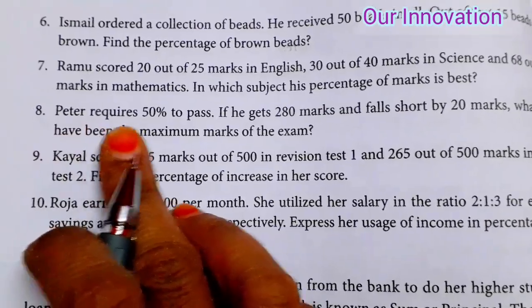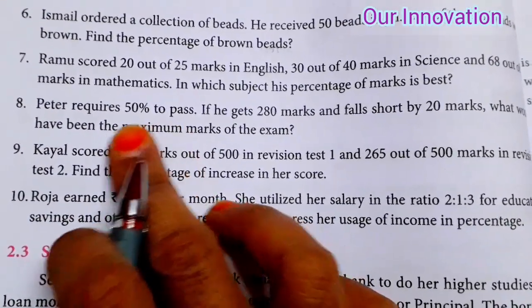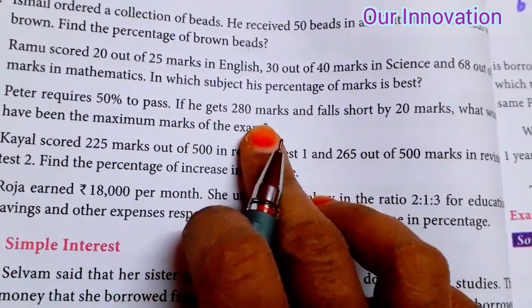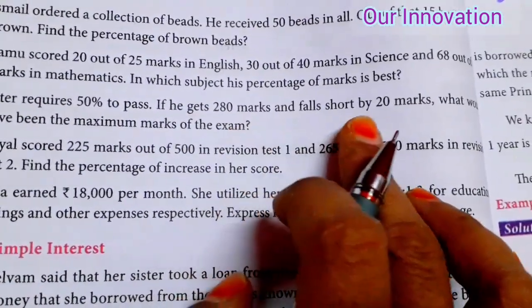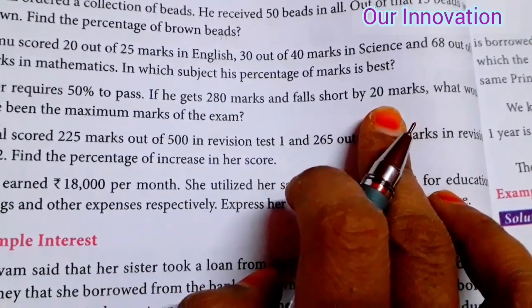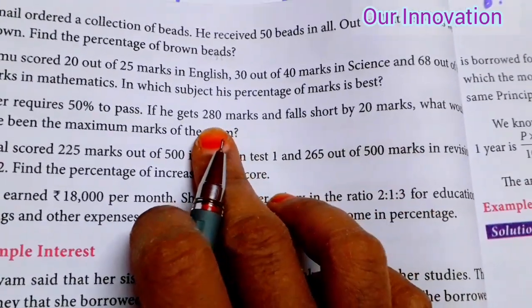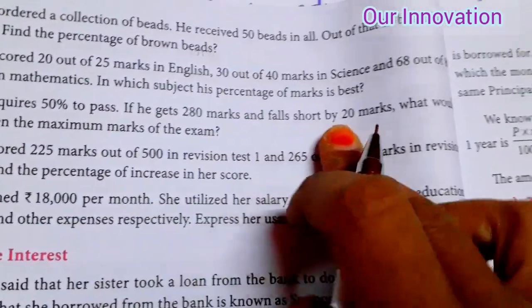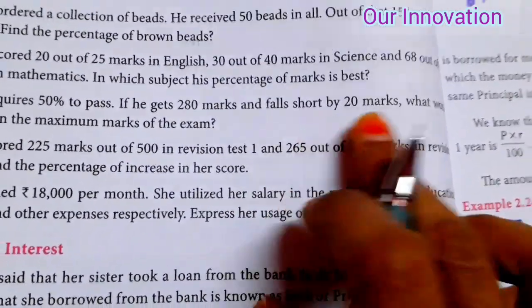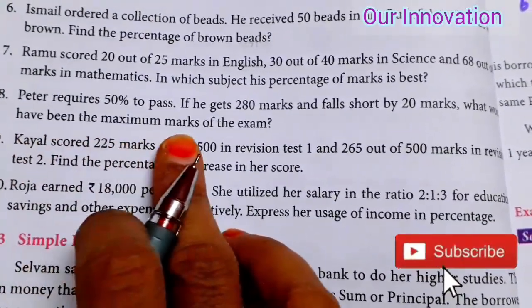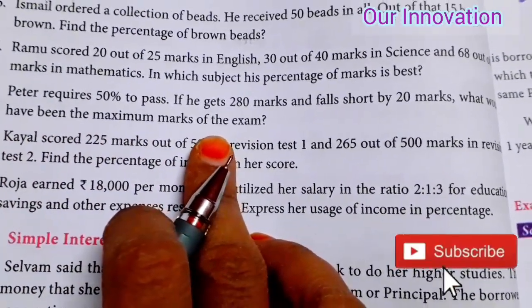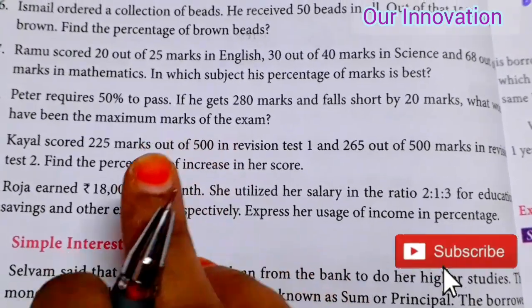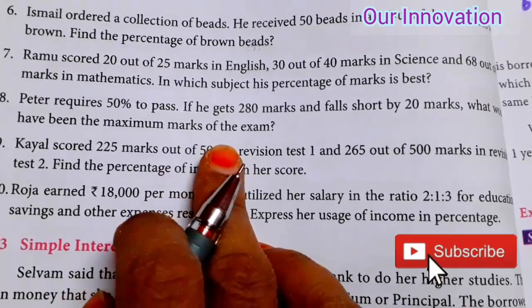Problem 8: Peter requires 50 percentage to pass. If he gets 280 marks and falls short by 20 marks, what would have been the maximum marks of the exam? Peter scored 280 marks but needs 20 more marks to pass. We need to find the total marks.